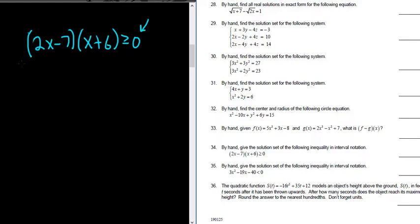The second step is to set each piece equal to 0. So you take each factor and you set it equal to 0. So we have 2x minus 7 equals 0 and here we have x plus 6 equals 0. So it's important that you set it equal to 0, not greater than or equal to 0. So we're using something called the test point method.